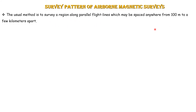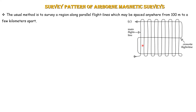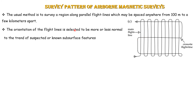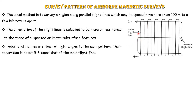The survey is done along parallel flight lines with spacing from 100 meters to a few kilometers, just like a ladder pattern. The main flight lines are selected normal to the trend of suspected values or known subsurface features — analogous to the geological strike. In addition to the main lines, additional tie lines are placed at right angles, with spacing five to six times that of the main flight lines.